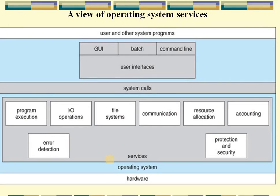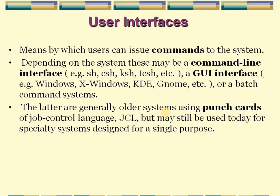This diagram shows the overview of operating system services. The operating system is the interface between the user program and computer hardware. The operating system provides services like user interfaces, program execution, input/output operations, file system communication, resource allocation, accounting, protection and security, and error detection. By using these services, the user can access the system very smoothly. Now we will see the services in detail.